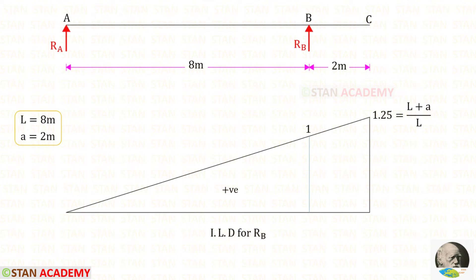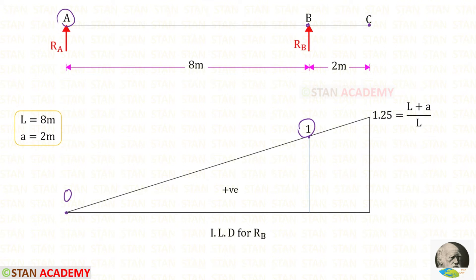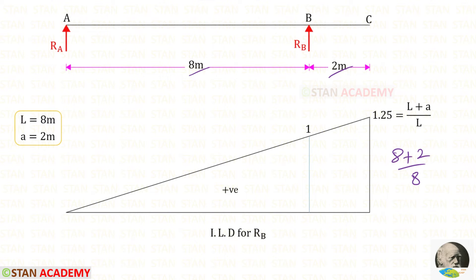Now let us draw the ILD for RB. At point A, the ordinate will be 0. At point B, the ordinate will be 1. At point C, the ordinate will be (L + A) upon L. L is 8 and A is 2, so 8 plus 2 upon 8 gives 10 by 8, which equals 1.25.